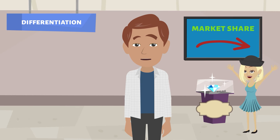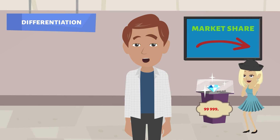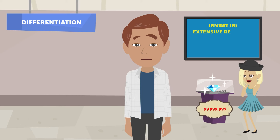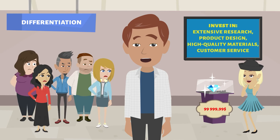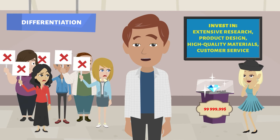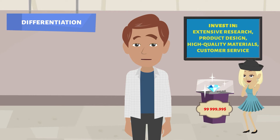Differentiation is also a kind of compromise. It requires setting higher prices for the goods offered to allow the organization to invest in areas such as extensive research, product design, high-quality materials or customer service. Consequently, not all consumers will be interested in the products of the organization due to their high prices.